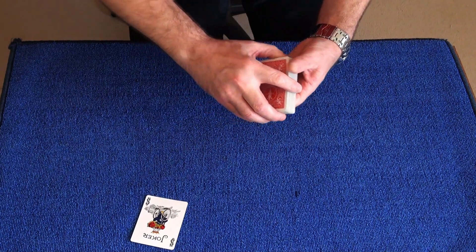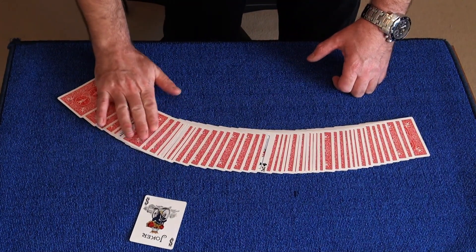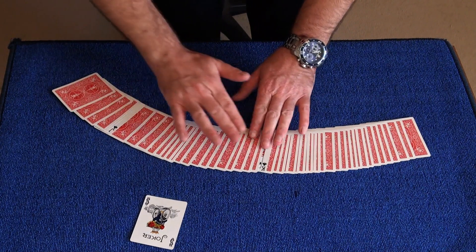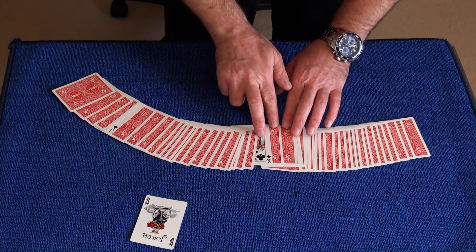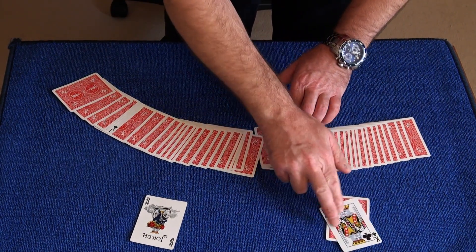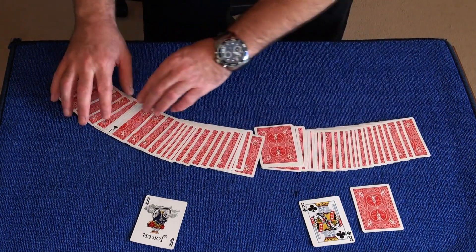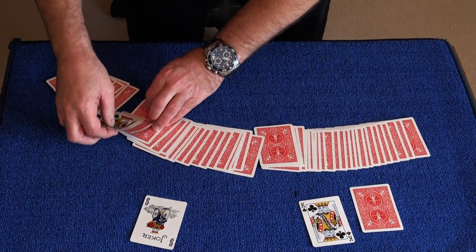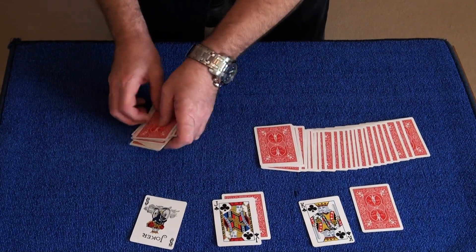Now we'll spread the cards out. And we'll see where their cards have ended up. And this king has ended up on top of this card here. And this jack has ended up on top of this card here. And I'll just gather up the rest of the cards.